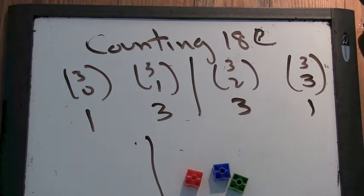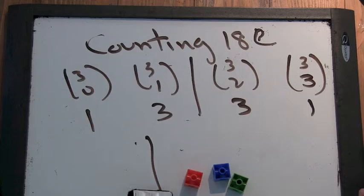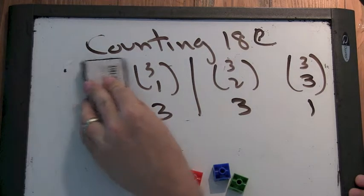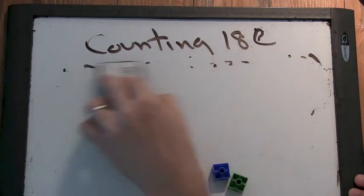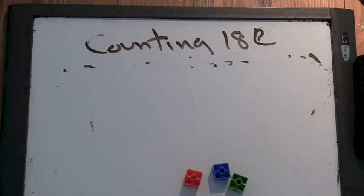So what do you think it's going to be for four? Maybe one, four, six, four, one. How come? Because you can choose... How did you know it would be one, four, six, four, one? That's what I mean.